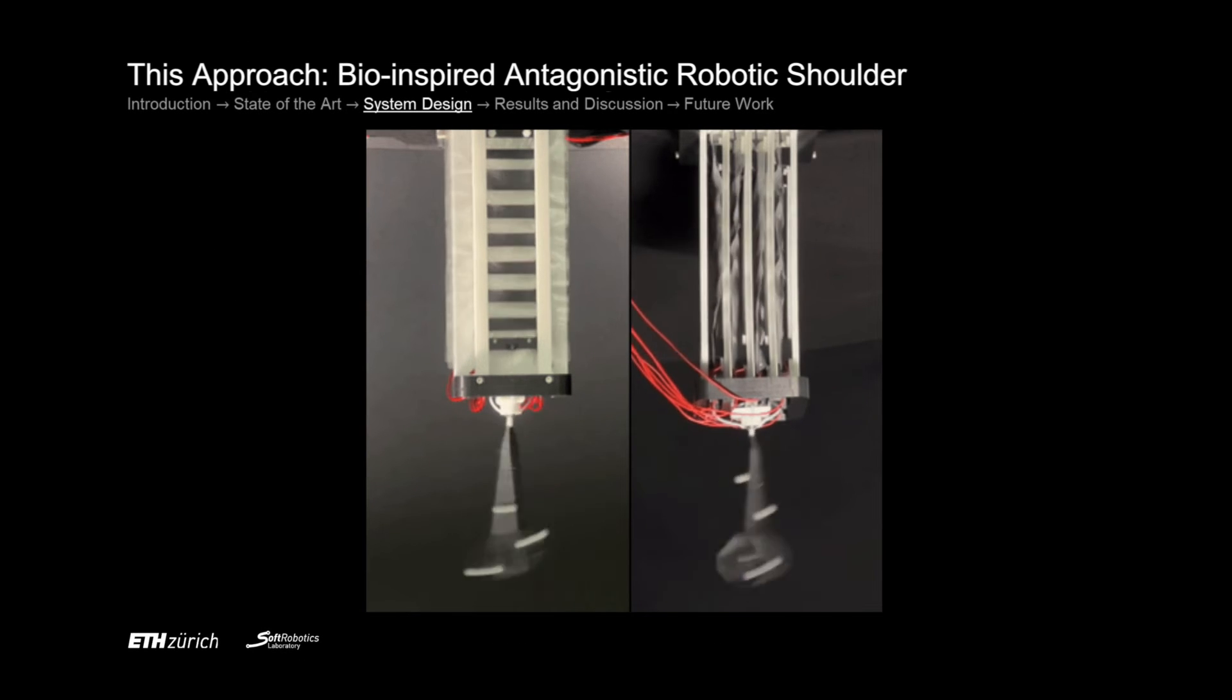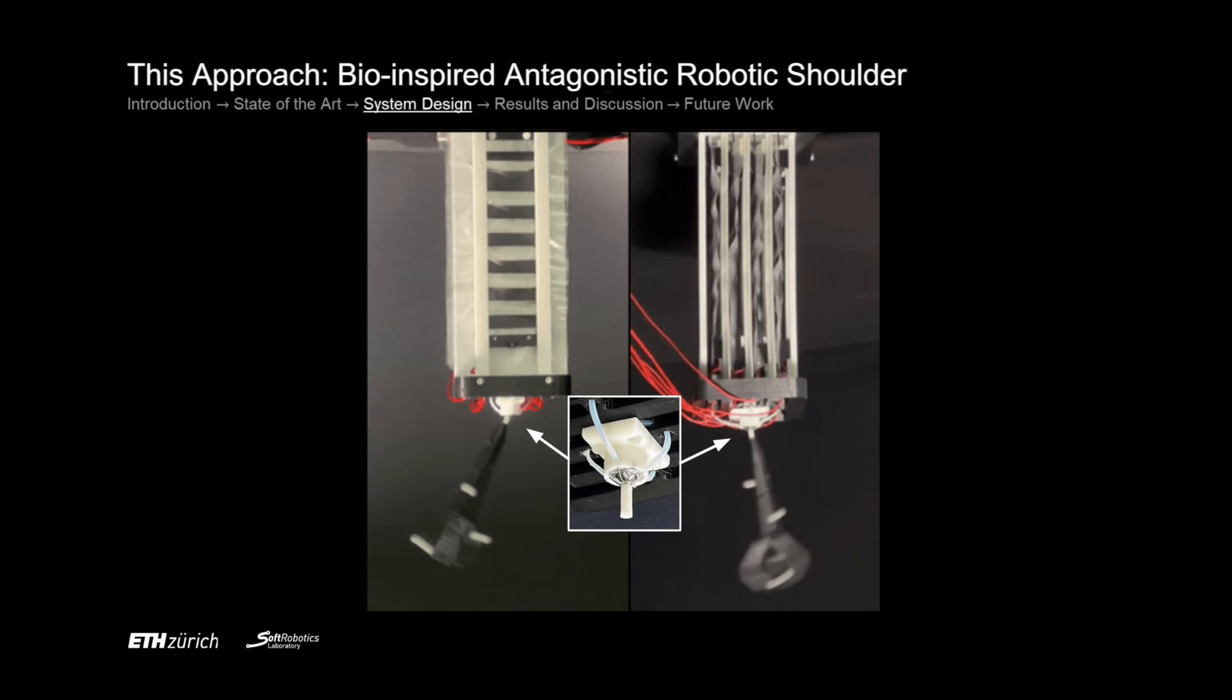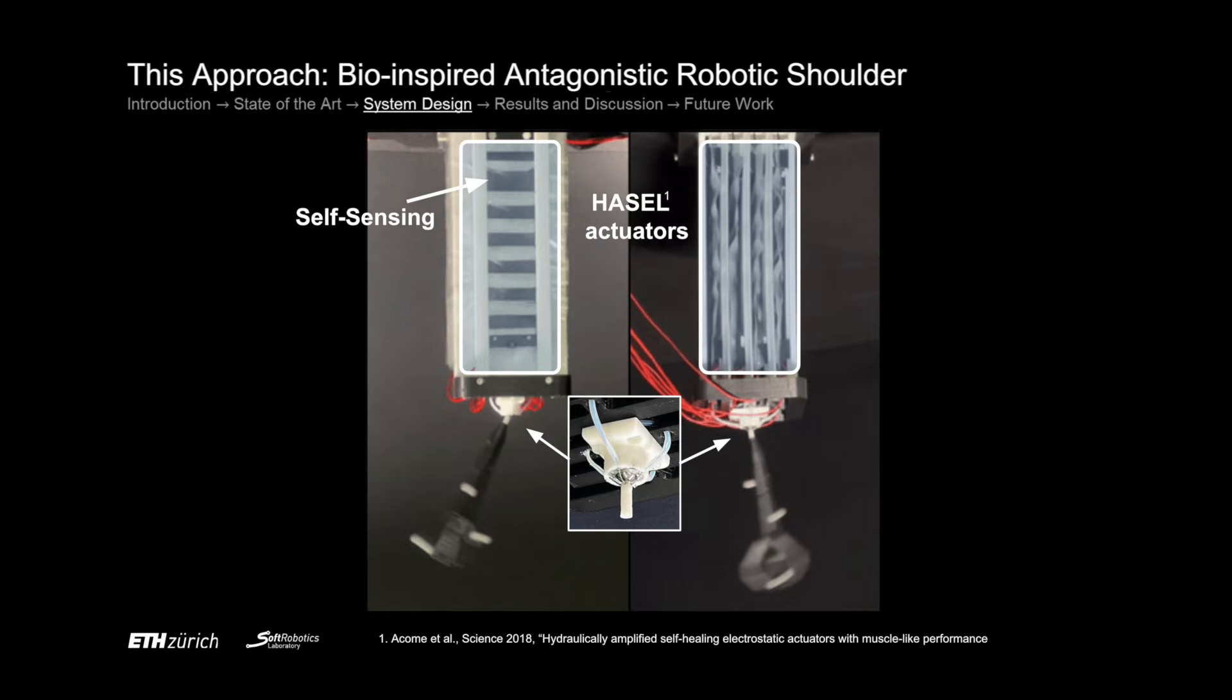Taking inspiration from the human shoulder, we propose a compact and lightweight system with a ball and socket joint that is connected via tendons to soft and compliant artificial muscles, also called HASEL actuators. We eliminate the need of external sensors thanks to our self-sensing capabilities of the actuators. This freedom ensures we have no limitation on the mechanical joint design.